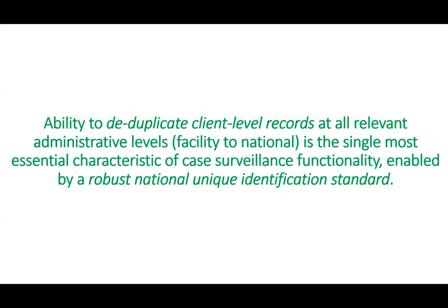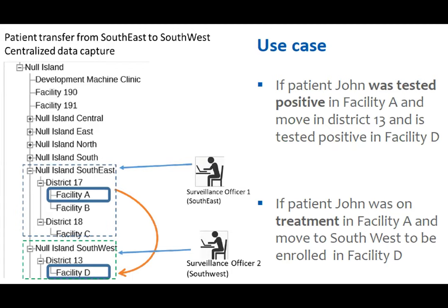On deduplication of records — the ability to deduplicate client records at all administrative levels from facility to national is essential. This requires a robust national unique identification standard. This isn't just a single unique identifier for health or for HIV; it's about identifying all available unique identifiers and patient identifying information and characterizing that under a policy which is then reflected in the digital tools. This enables us to determine if somebody has been diagnosed in one facility, moves, and is diagnosed again in a different facility.